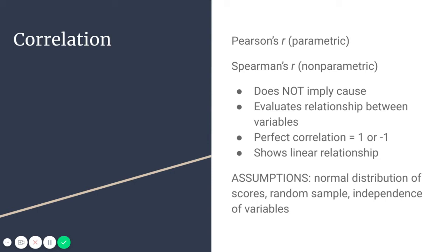Correlation would not assume linearity because the whole point of the test is to show linearity — it would be strange to have that as an assumption. You're assuming you're going to find a linear relationship if you're doing a correlation, but you don't have to find that ahead of time; that's what the test is looking for.